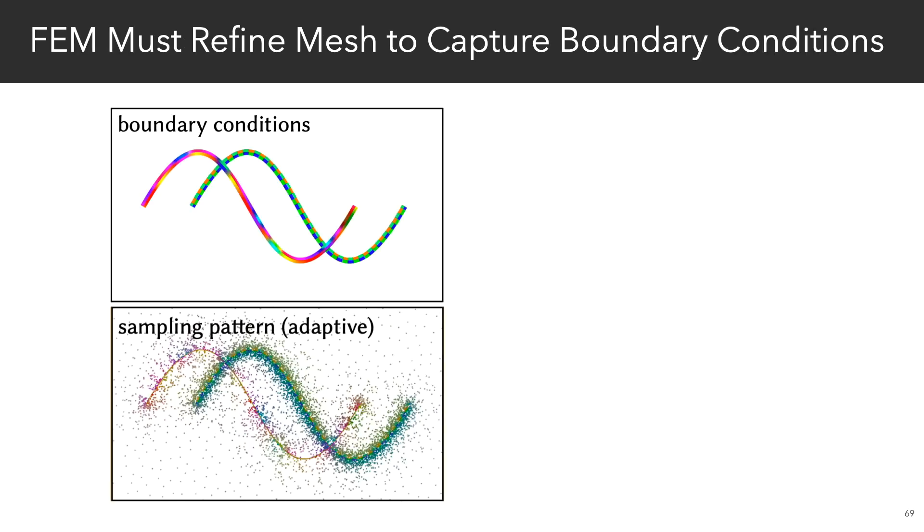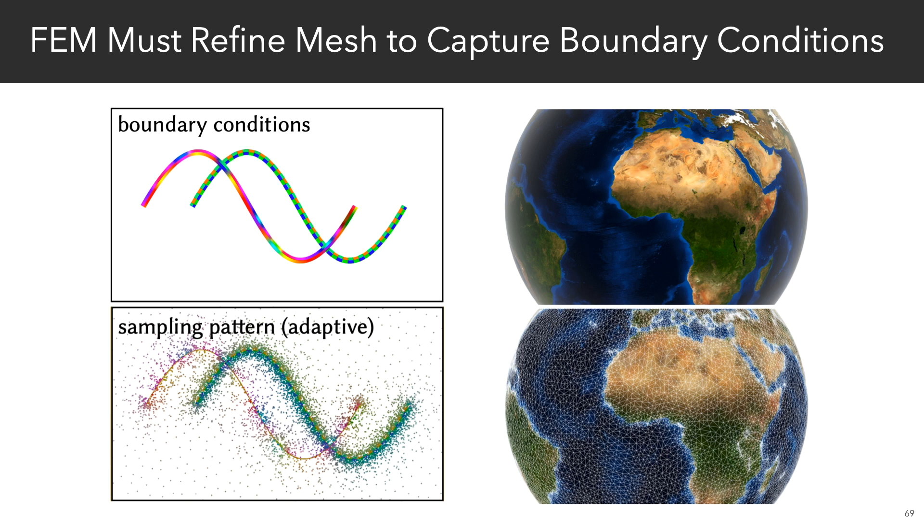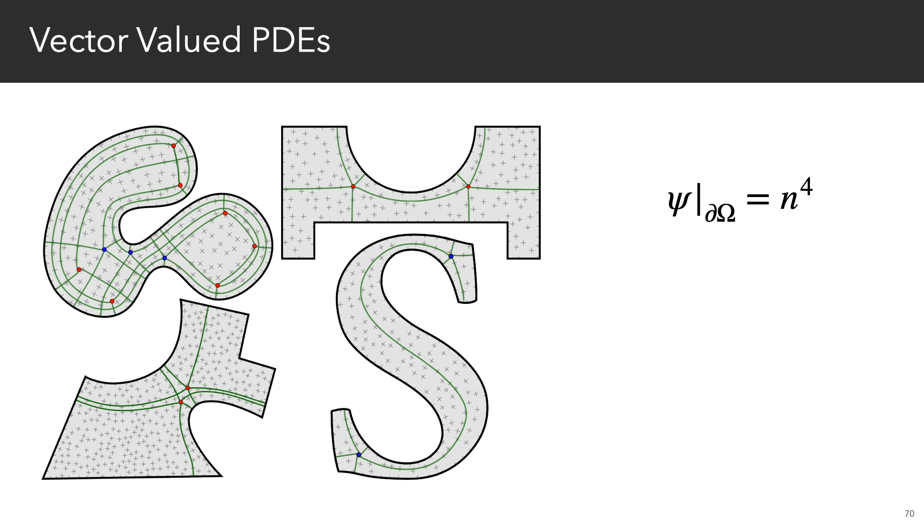An extra benefit of Monte Carlo is that it can decouple the boundary conditions and the sources from the geometry. But conventional solvers have to refine the mesh ahead of time to capture high-frequency boundary conditions. We can also solve vector-valued problems. So here we compute a cross-field inside a 2D domain by interpolating the boundary normals. And we use an ODE integrator to decompose the domain into quad-patches by following the gradient of the field.